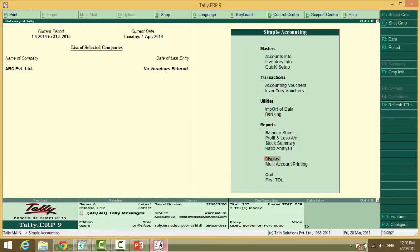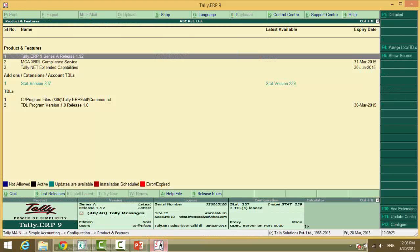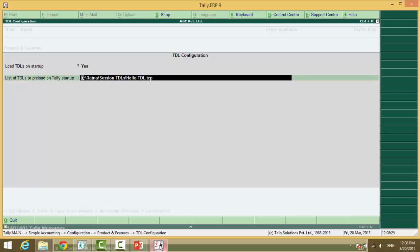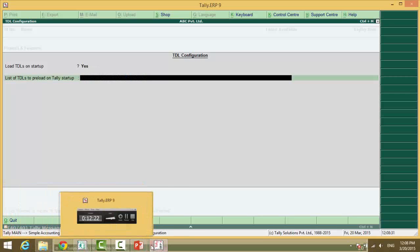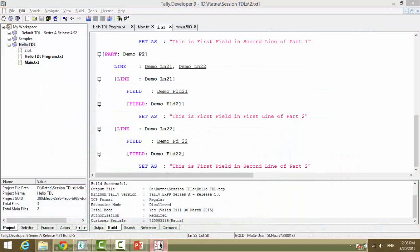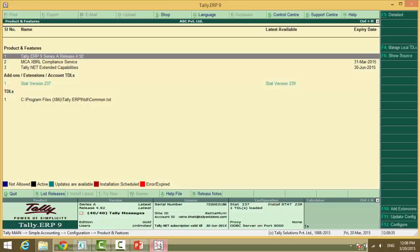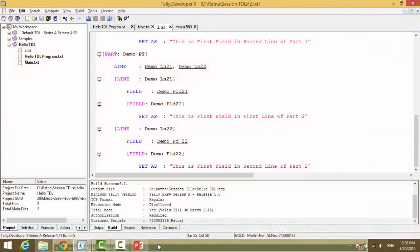All we need to do is F12 TDL F4. Obviously TCP cannot be refreshed, we will have to add the text file or just remove this TCP and execute it from here.